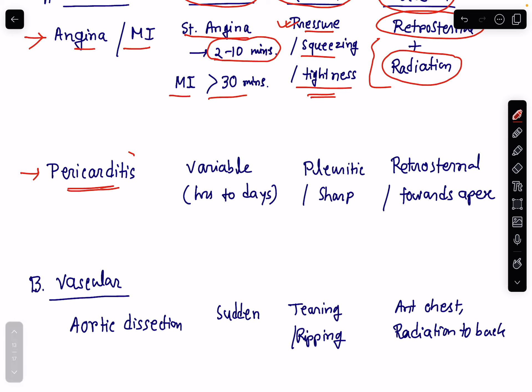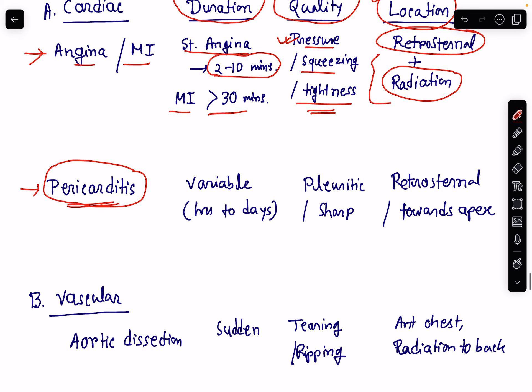Pericarditis: the duration of pericarditis chest pain is variable — it may be hours to days. The quality of the chest pain is sharp or pleuritic type and the location is retrosternal, towards the cardiac apex sometimes.